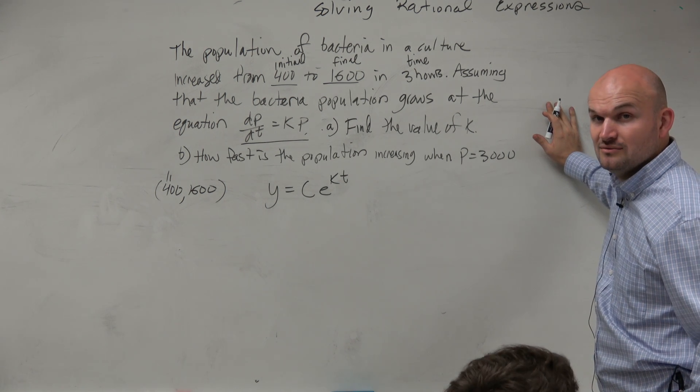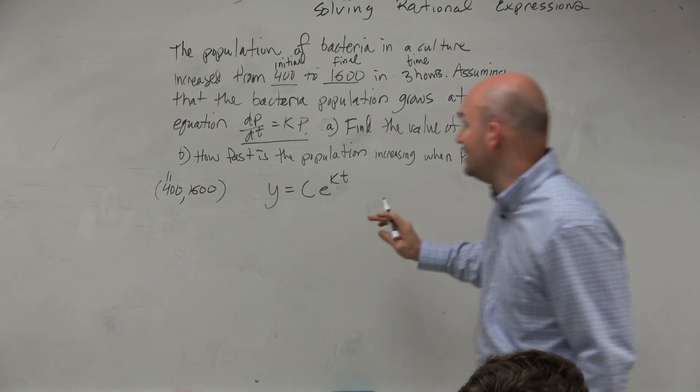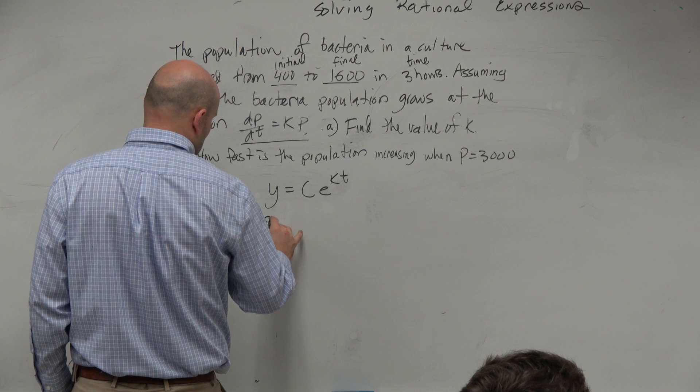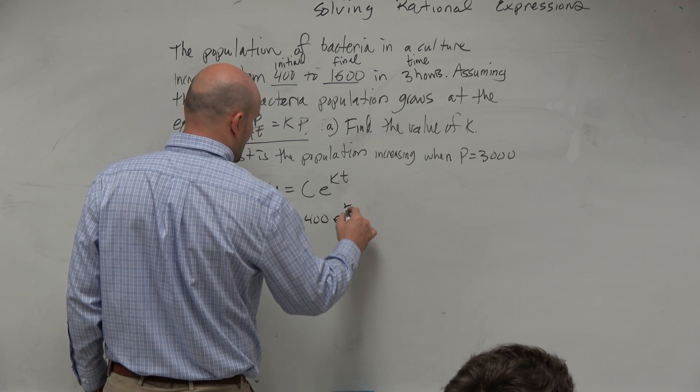So guys, all we need to do is find k. Well, do we have enough information? We have everything except for k, right? We know everything except for what k is. So I can say 1,600 is equal to 400 times e to the k times 3.